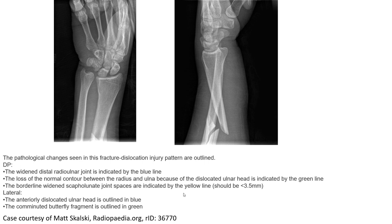Here we find the widened distal radio-ulnar joint, indicated by the blue line, and the loss of normal contour between the radius and ulna due to the dislocated ulnar head. The borderline widened scapholunate joint space is also indicated. In the lateral view, we see the anterior dislocation of the ulnar head outlined, and the comminuted butterfly fragment is outlined.